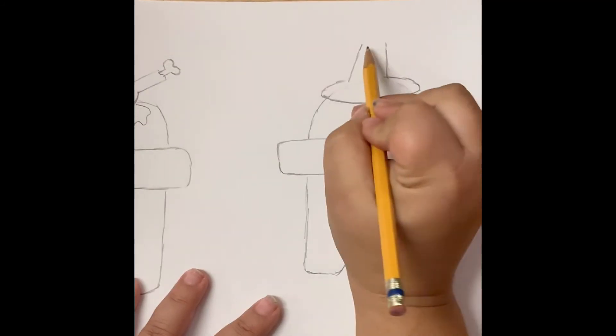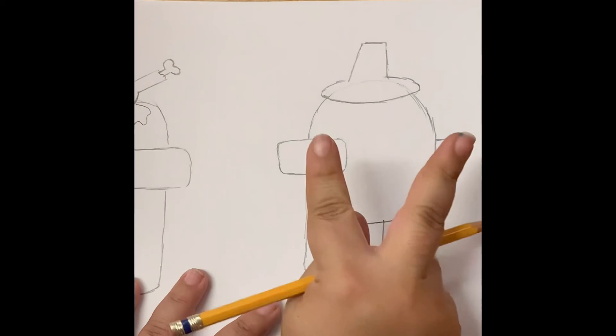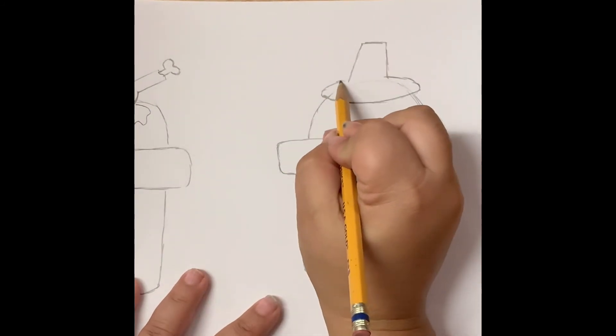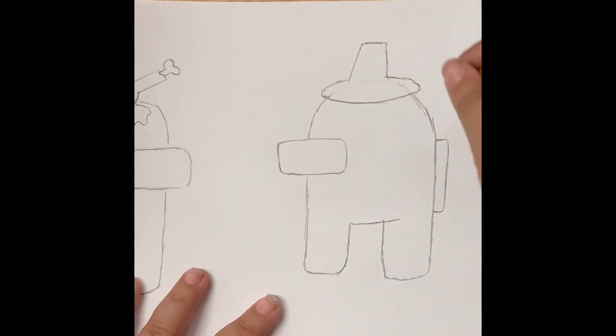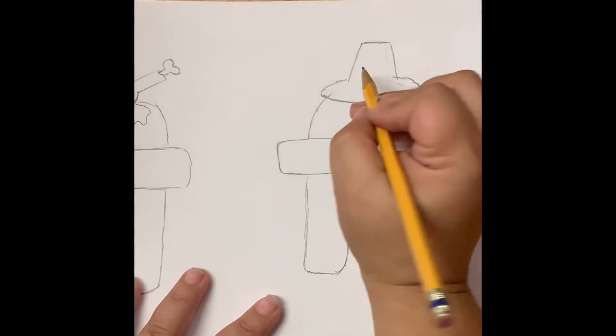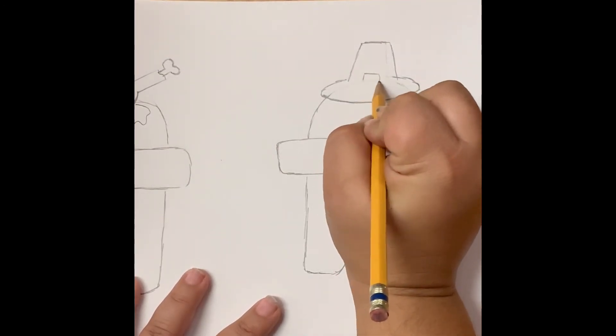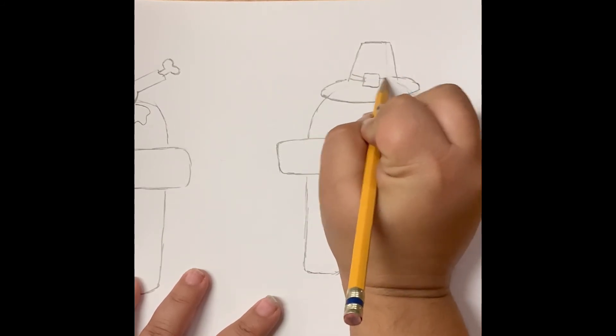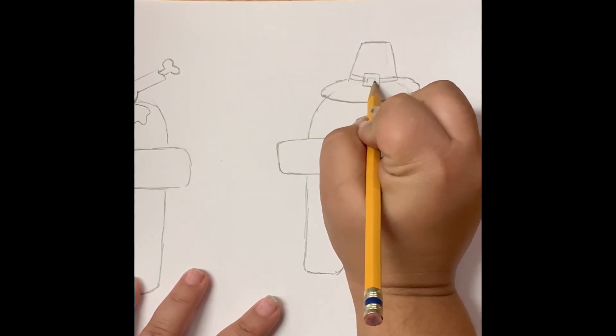Then the top of the pilgrim hat is almost like a square but it goes in like a trapezoid. That's the main details of the hat. I want to make mine a little bit thicker, so let's fix this line right here. Now they usually have little belt buckles on them, so I'm going to put a little square and then put my lines here for some little designs.